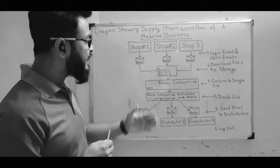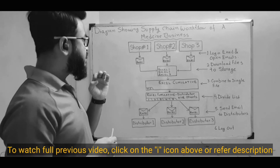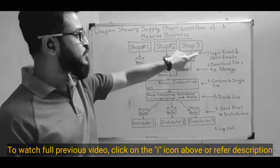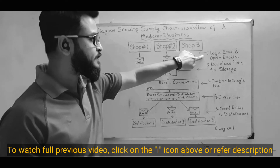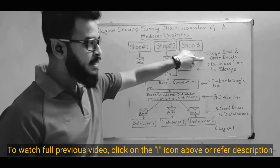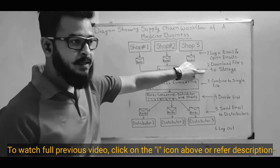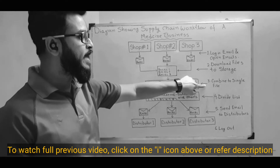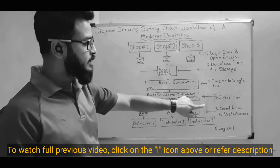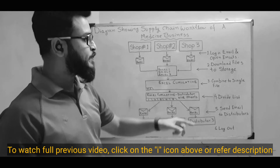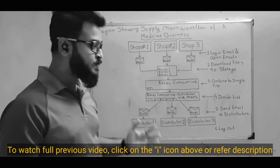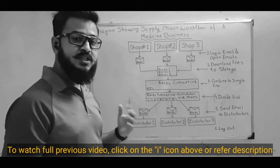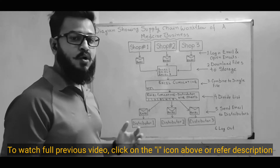If you analyze and divide the process into steps, you will understand that the person needs to: log in, open email, download the file, store the file, combine everything into a single file, then divide it on the basis of providers or distributors, then send email to those distributors, and then log out.